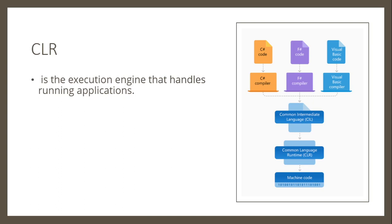So how does CLR work? First, the compiler converts your code into an intermediate language code, which is independent from any machine. Then it's the work of the Common Language Runtime to convert that code into machine code. Because intermediate language code is independent from any machine, when you compile your code, that application will run on any machine regardless of different hardware, architecture, or operating system.